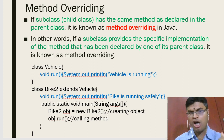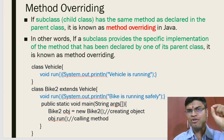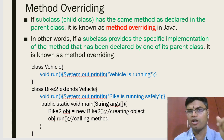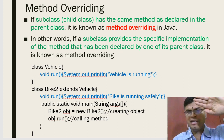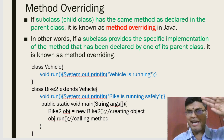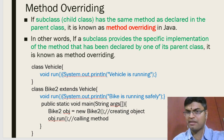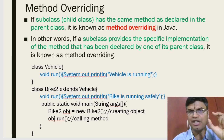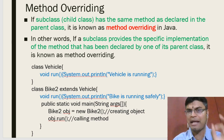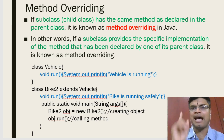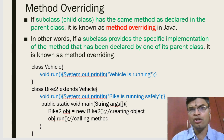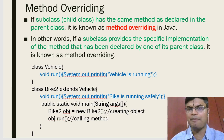When we talk about method overriding, we are talking about two methods with the same name. You always need two classes — a parent class and a child class. Both the parent and child class will have a method with the same name and the same parameters. Method overriding also provides something called runtime polymorphism in Java, which we will discuss in coming videos.